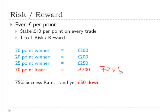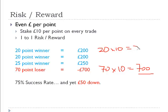Think about it: 70 times £10 equals £700 at risk on that trade, whereas 20 times £10 equals £200 at risk on the others. That means we were effectively saying we were three and a half times more confident on that volatile trade. But we weren't — so why were we risking so much more money?